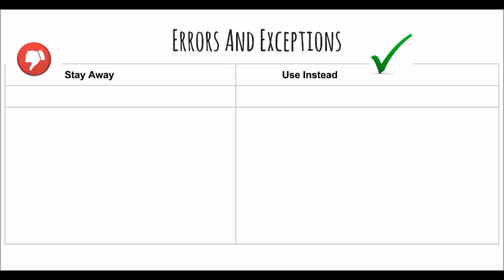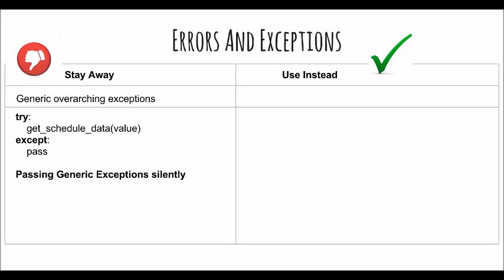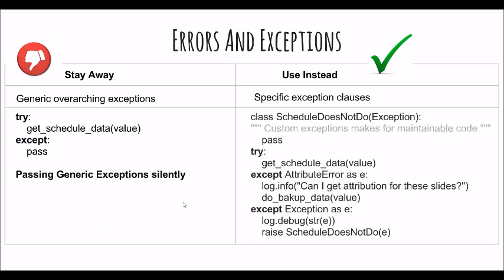Our next section deals with errors and exceptions. You should stay away from generic overarching exceptions — for example, a code snippet that raises an exception and then just passes it. It's like you have no idea what your system is doing, so it's better not to have this in your code. You should use instead specific exception classes where your method actually raises a known exception that is caught and handled appropriately. While naming exceptions, name them as you would name classes, suffixing with 'Error'. Lesson number eight: raise specific exceptions.